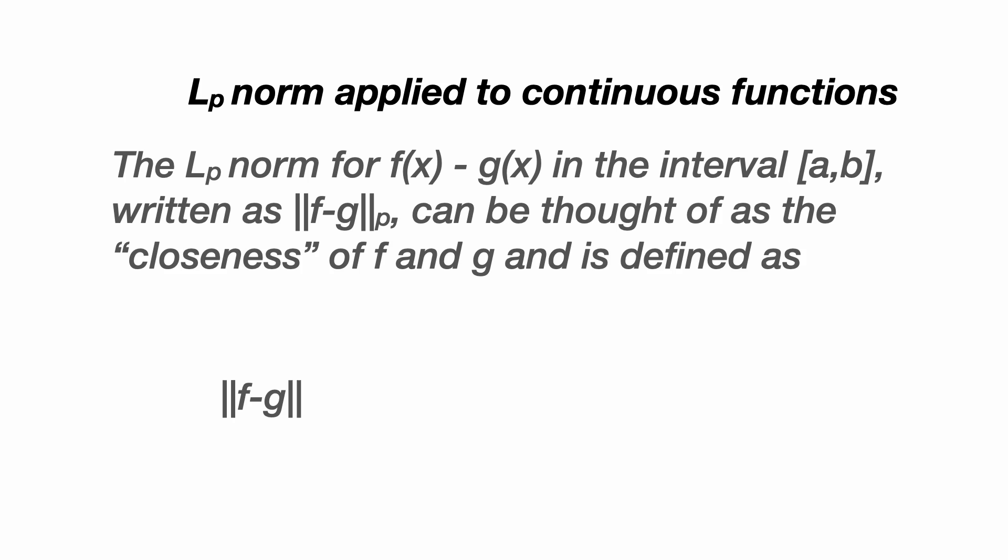The Lp norm for f of x minus g of x on the interval from a to b is written in the same way as we wrote the Lp norm for vectors and can be thought of as a measure of the closeness of f and g, or the distance between f and g if you'd like to stick with the idea of a metric space of functions. And it's defined by this integral.